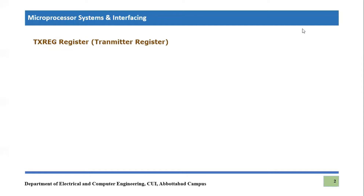What is Transmitter Register? TXREG is a specific register which is dedicated as an SFR portion of the file register for the PIC18F microcontroller, and TXREG stands for Transmitter Register. As it suggests, whatever data we want to transmit, we will use this register because it serves a transmitter purpose.